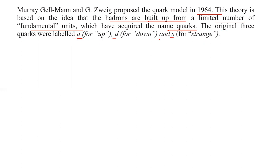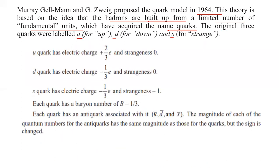These are the fundamental quarks: up, down, and strange. The u quark has a charge of plus two by three e and strangeness zero. The d, down quark, has an electric charge of minus one by three e and strangeness zero. The strange quark has an electric charge of minus one by three e and strangeness equal to minus one. Each quark has a baryon number B equal to one by three.